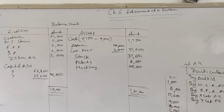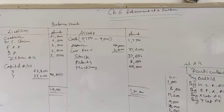This numerical is comprehensive. As the adjustment of capital has been removed from your syllabus, retirement of the partner is now completed. We will solve one or two more comprehensive problems, and afterward we will start the topic of death of the partner. Thank you, happy learning.